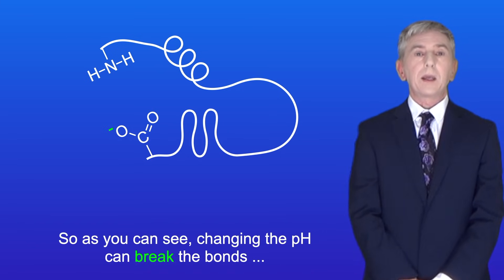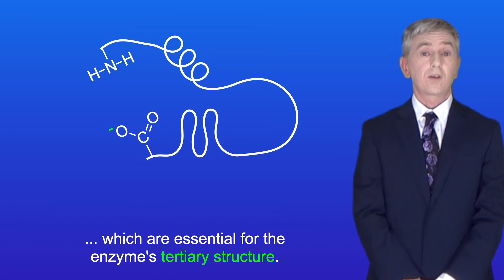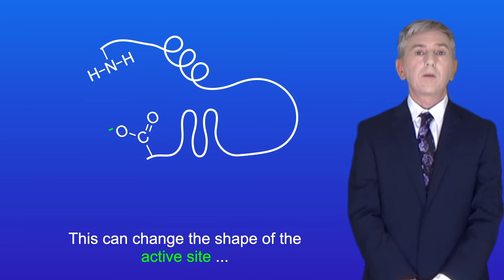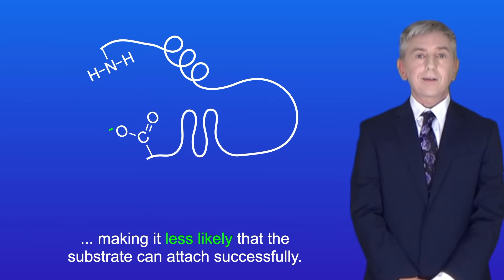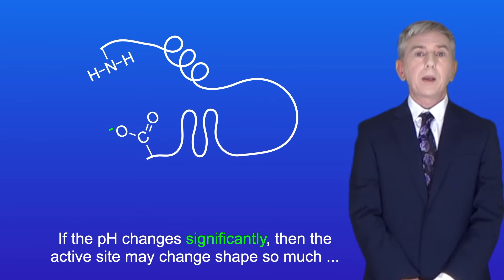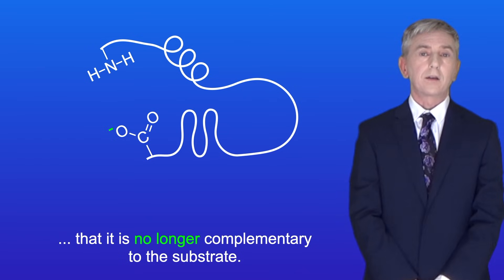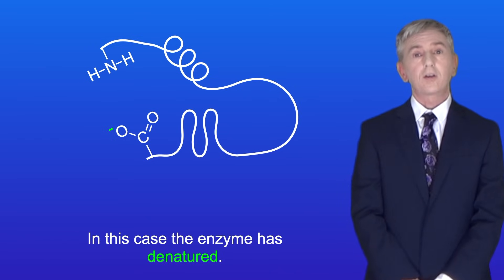So as you can see, changing the pH can break the bonds which are essential for the enzyme's tertiary structure. This can change the shape of the active site, making it less likely that the substrate can attach successfully. And if the pH changes significantly, then the active site may change shape so much that it's no longer complementary to the substrate, and in this case the enzyme has denatured.